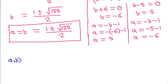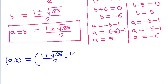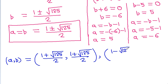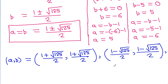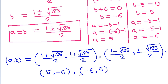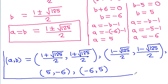So the four solution pairs are: a equals (1 plus square root of 125)/2 and b equals (1 plus square root of 125)/2; a equals (1 minus square root of 125)/2 and b equals (1 minus square root of 125)/2; a equals 5 and b equals minus 6; and a equals minus 6 and b equals 5. These are the four values of a and b.